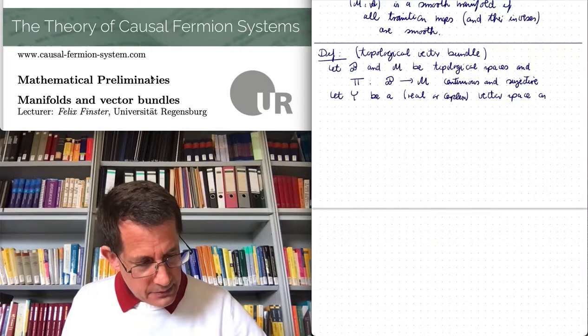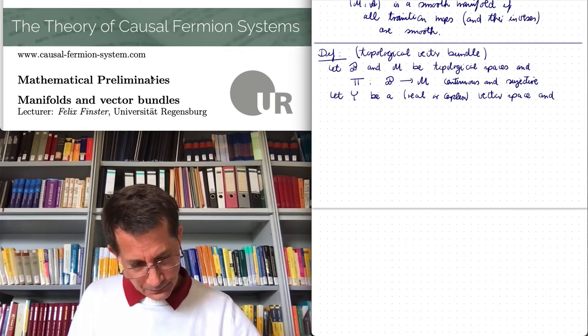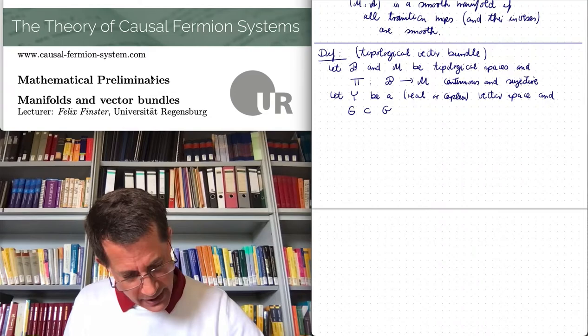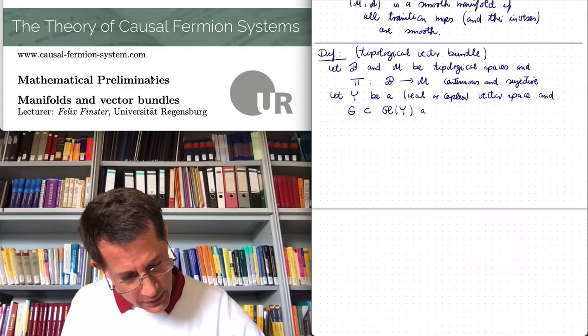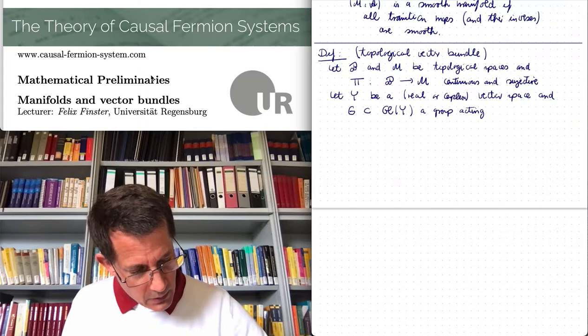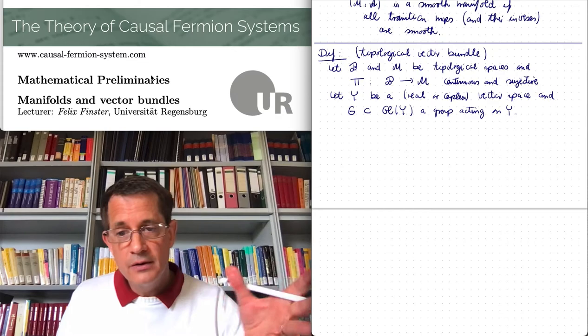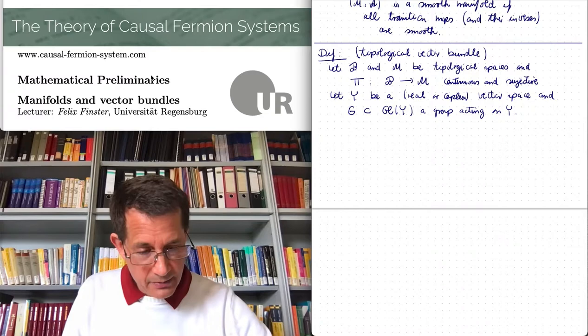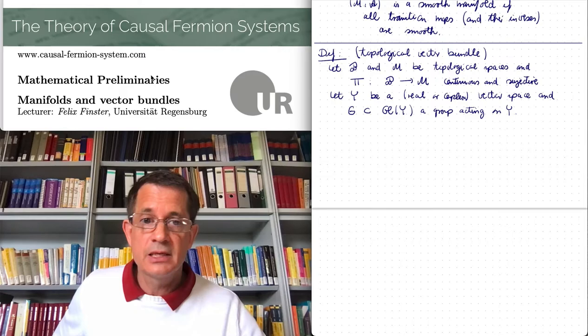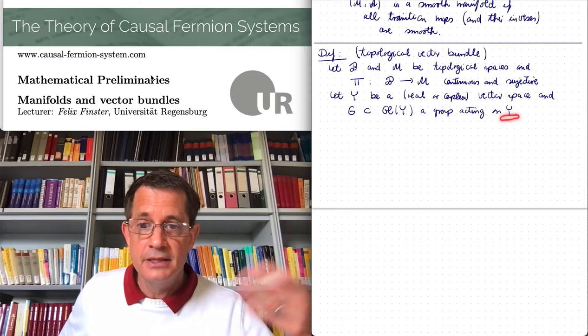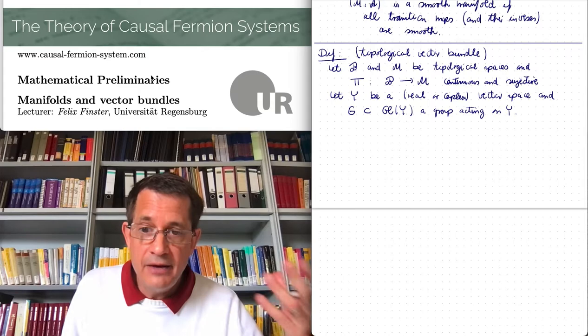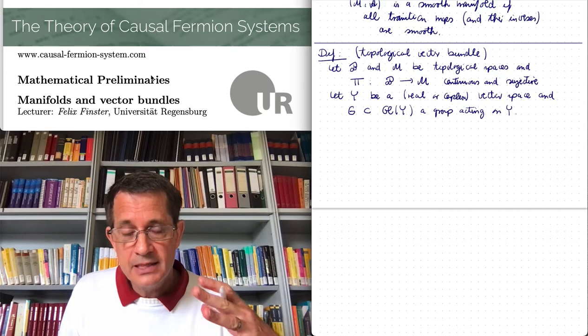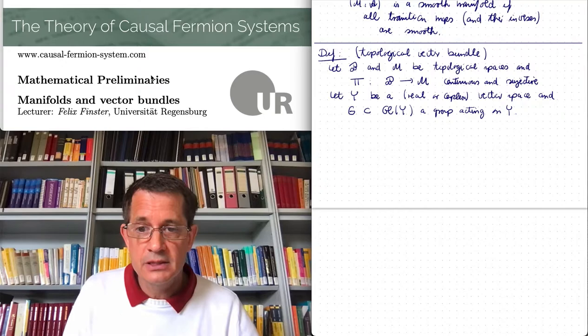Moreover, we need a group — the so-called structure group, denoted G — which is a subgroup of the general linear group acting on Y. As a typical example, you can take all invertible linear mappings from Y to Y, which is what the general linear group is. But it could also be a proper subgroup — for example, the unitary operators. Typically, when the vector space has additional structure such as a scalar product or indefinite inner product, the structure group will be a proper subgroup of the general linear group.